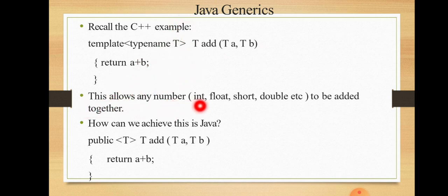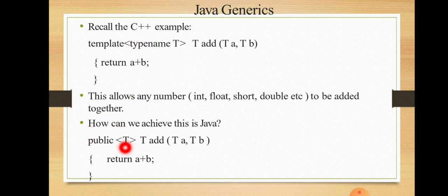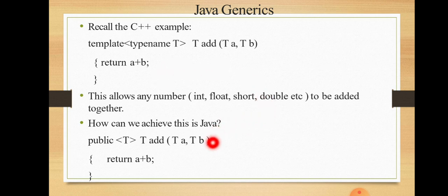This C++ template allows any numeric type — int, float, short, double, etc. — to be added together. For example, add(5, 6) returns 11; add(5.6, 7.8) returns the corresponding double result. In Java, we achieve the same thing by writing: public T, T add(T A, T B). Instead of the C++ template keyword, in Java we use angle bracket notation for the type parameter.